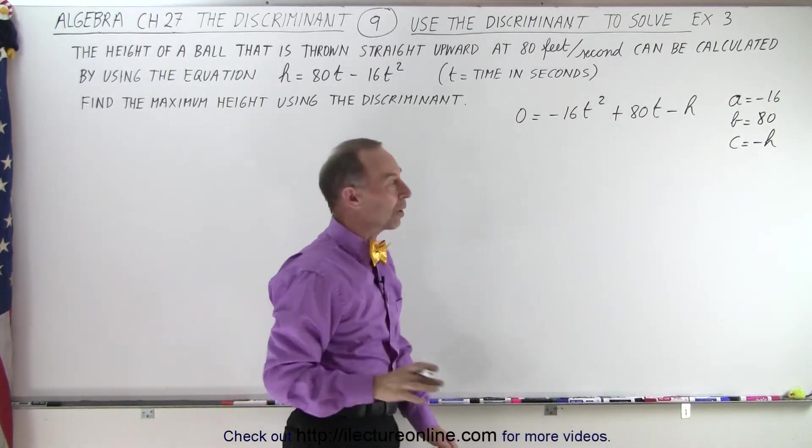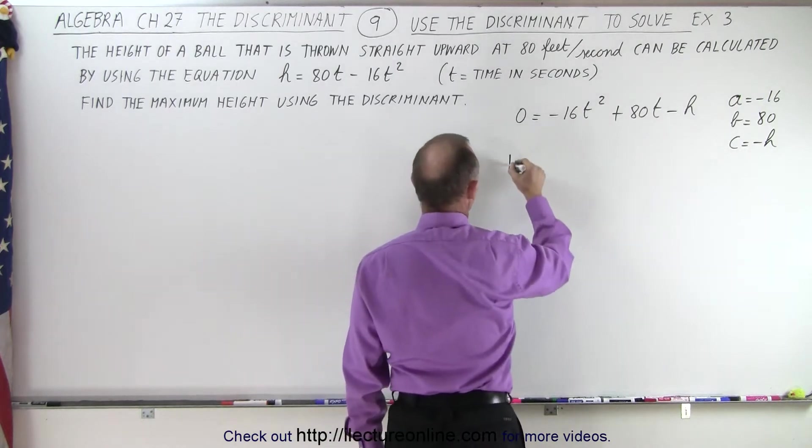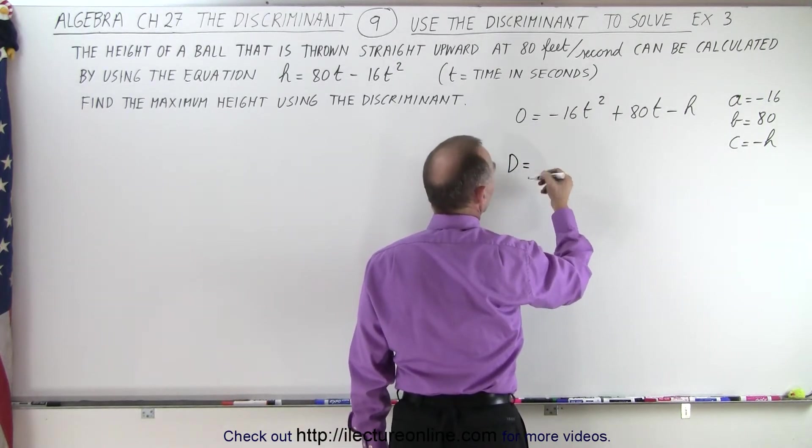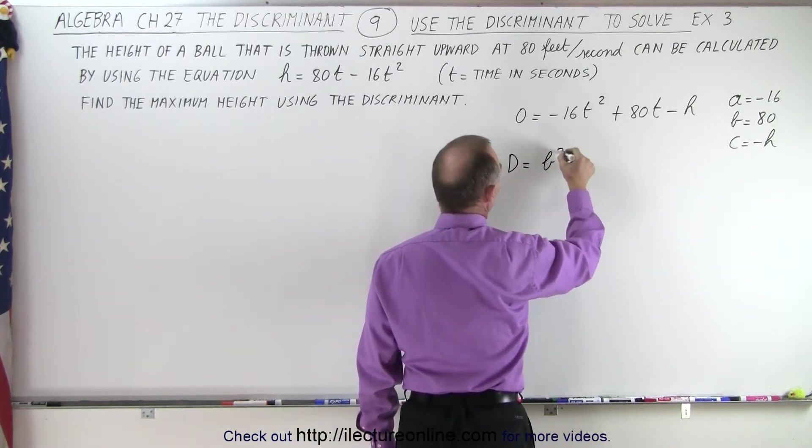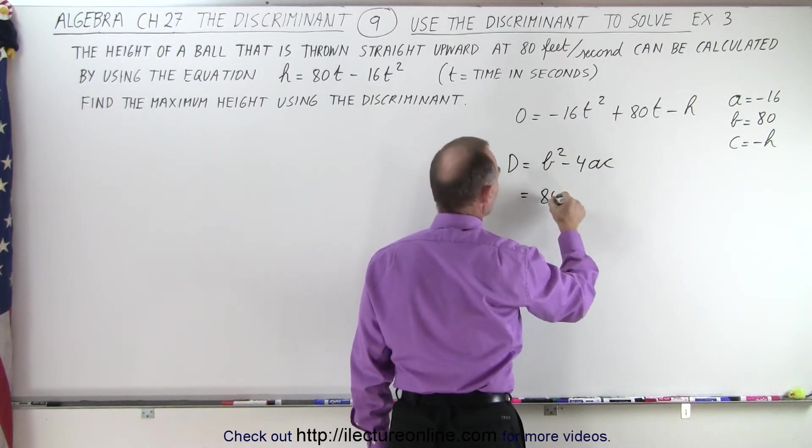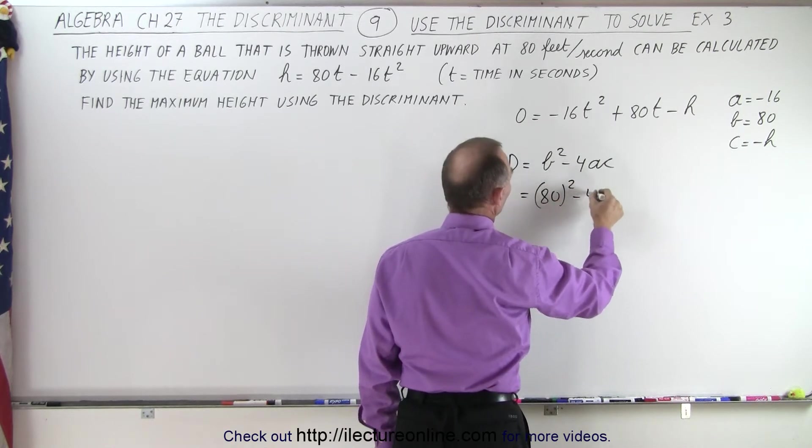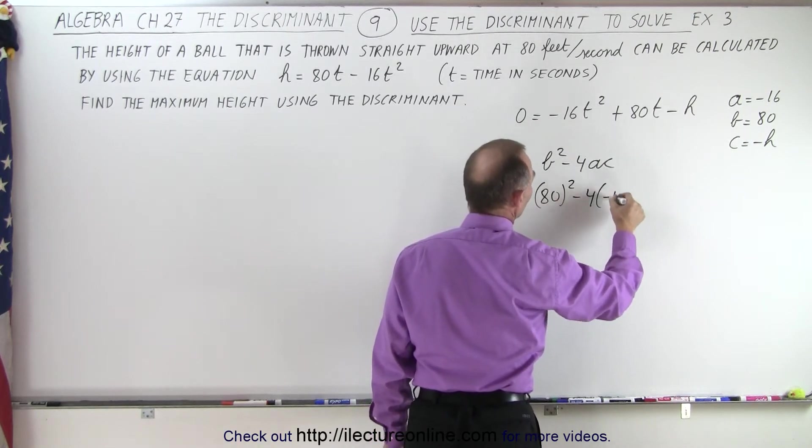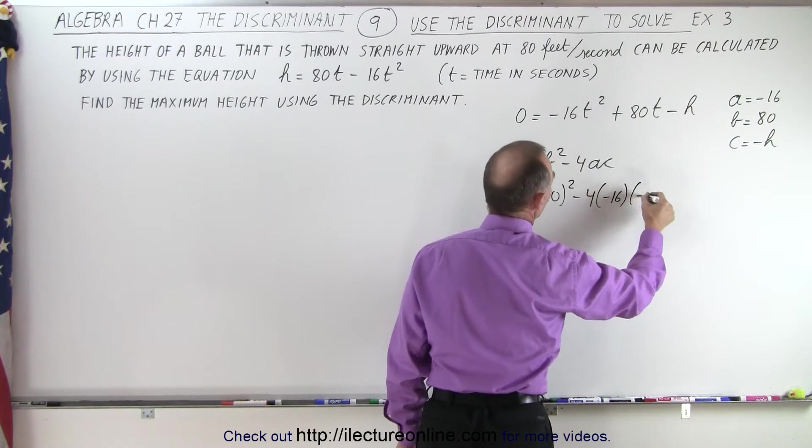Now we're going to plug that into our discriminant. So the discriminant is equal to b² - 4ac, and therefore that would be 80² minus 4 times a, which is -16, times c, which is -h.